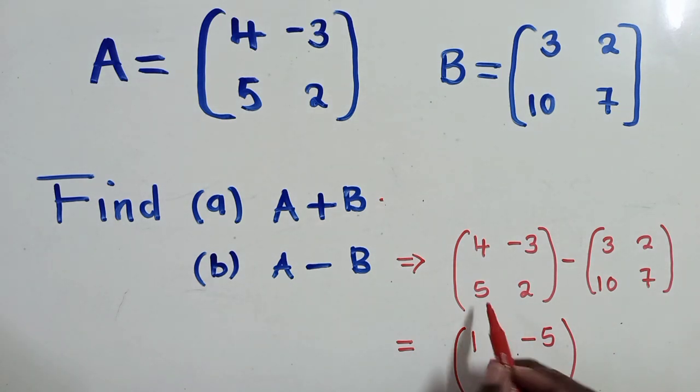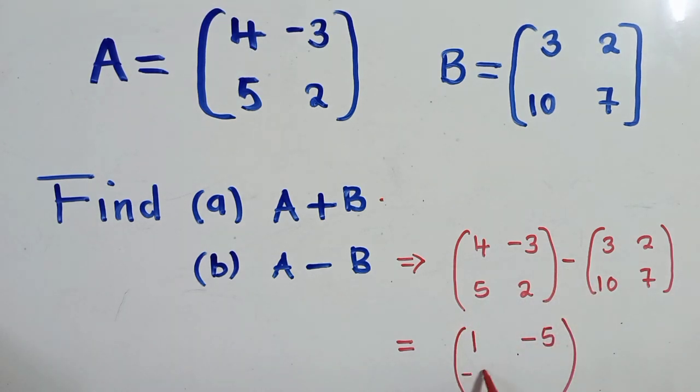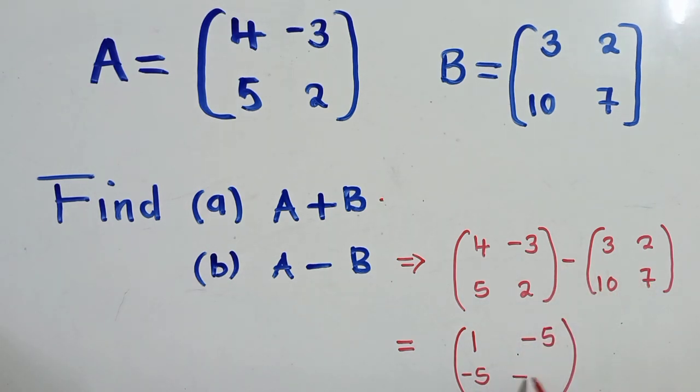So next here, we're going to say 5 minus 10, that will give us a negative 5. Here, 2 minus 7, it will also give us a negative 5.